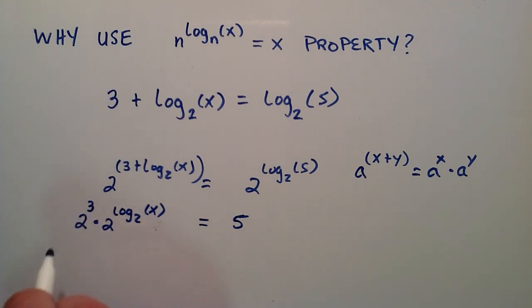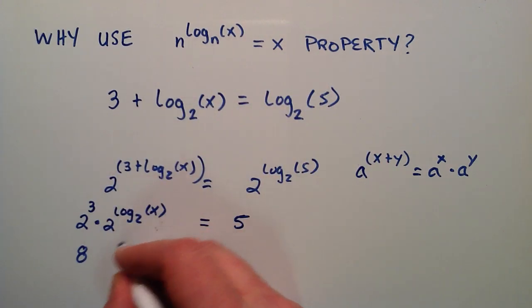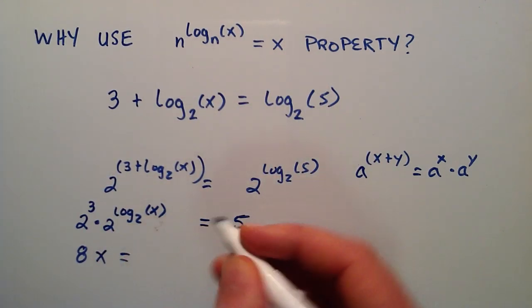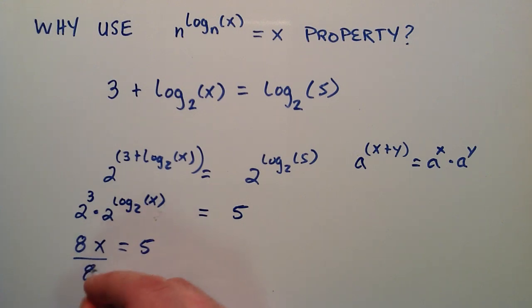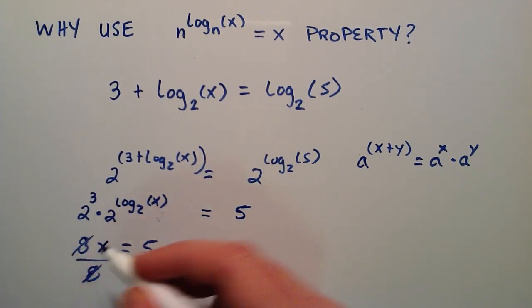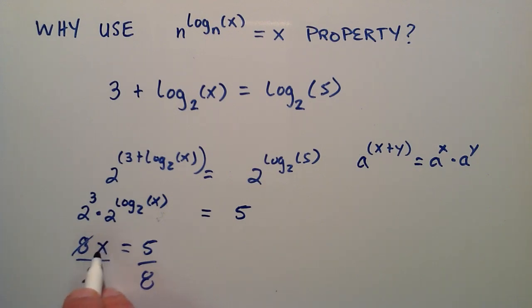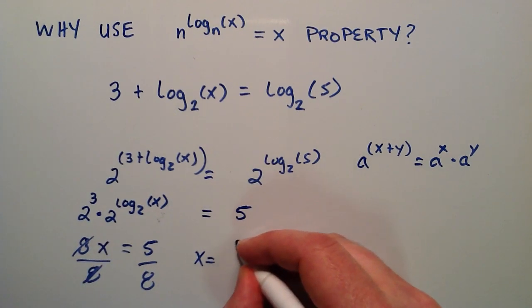So now we have 2 to the 3 which is 2 times 2 times 2, basically just 2 multiplied by itself 3 times. So 2 times 2 times 2 equals 8. And then that's multiplied by 2 raised to the log base 2 of x. Well, this part right here is once again in this form here. So we have 2 as our base, and 2 is also the base of the logarithm. So this right here is equal to whatever the argument is by this property. So this part simply becomes x. So now we have 8x is equal to 5. So if we divide both sides by 8, then 8 over 8 cancels, leaving us with x on the left hand side, and x equals 5 over 8. So that is our solution here.